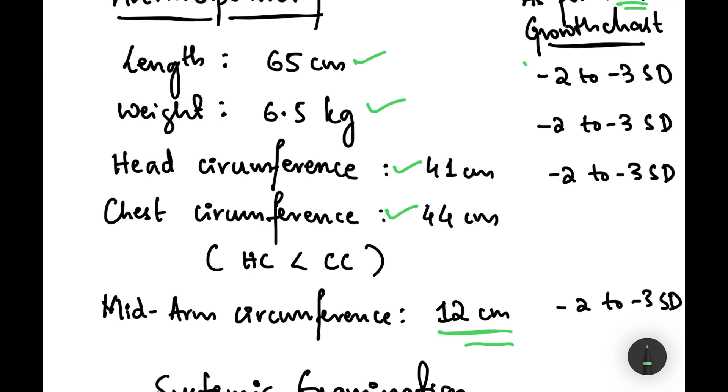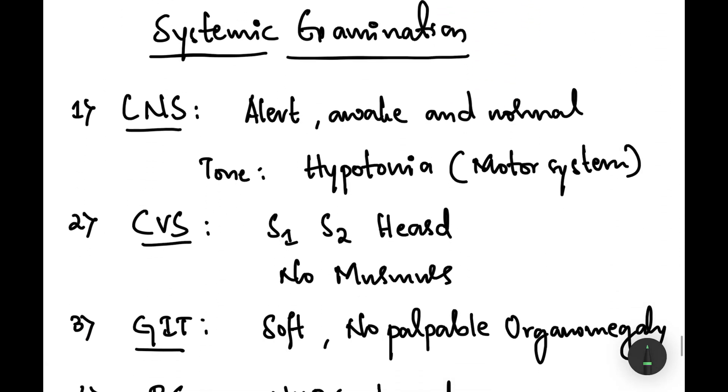Moving on to the systemic examination, the child was alert, awake, and normal. Motor system we had hypotonia. That's it.